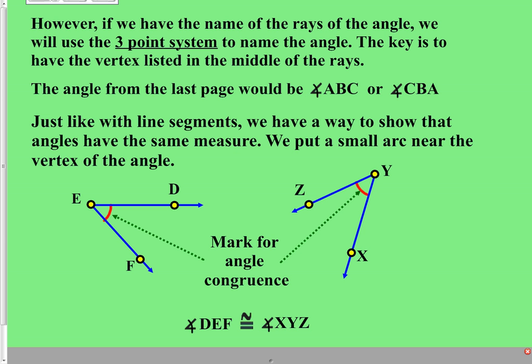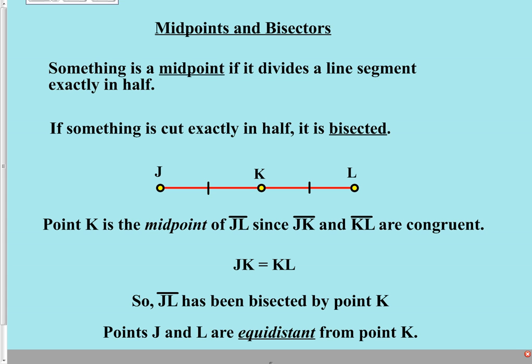We also saw that angle congruence marks — a little arc near the vertex — appear in diagrams. Matching numbers of angle congruency marks indicate congruent angles. We then came across related definitions: midpoint is something in the middle; bisected means cut exactly in half — in the case of a line segment, you must have a midpoint. If you have a midpoint, that point is equidistant — meaning equal distances — from the two endpoints.